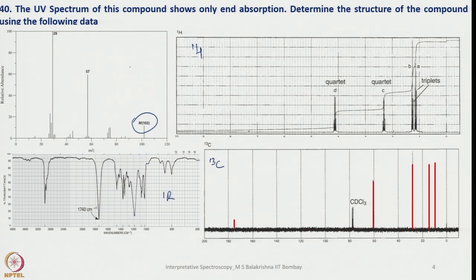With this data we should find out what molecule we are referring to. First, let us look at the molecular mass of 102. From this we have to try to arrive at a tentative molecular formula, and then look into saturation and unsaturation if there are any, and proceed that way.